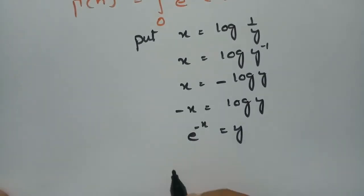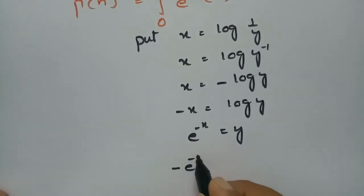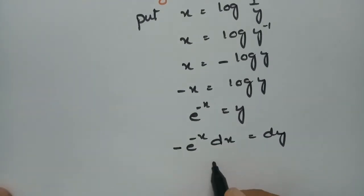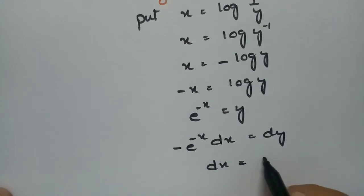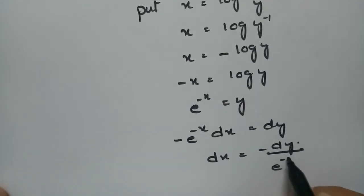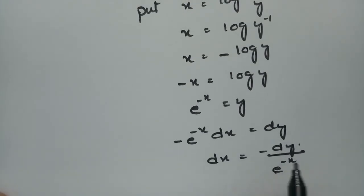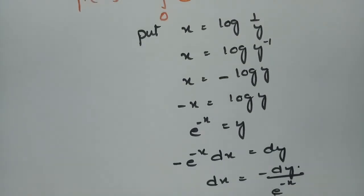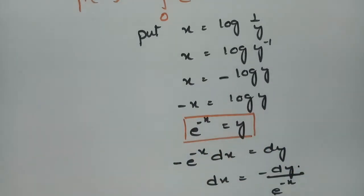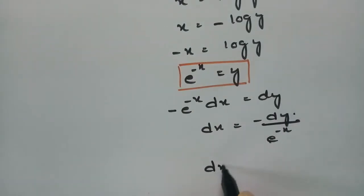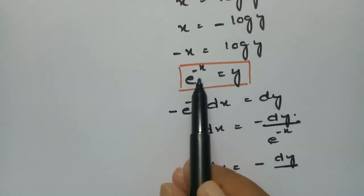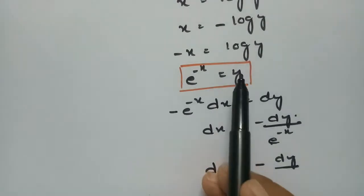If we take the derivative on both sides, then minus e to the power minus x into dx is equal to dy. So dx is equal to minus dy divided by e to the power minus x. Since e to the power minus x is y, our dx value becomes minus dy divided by y.